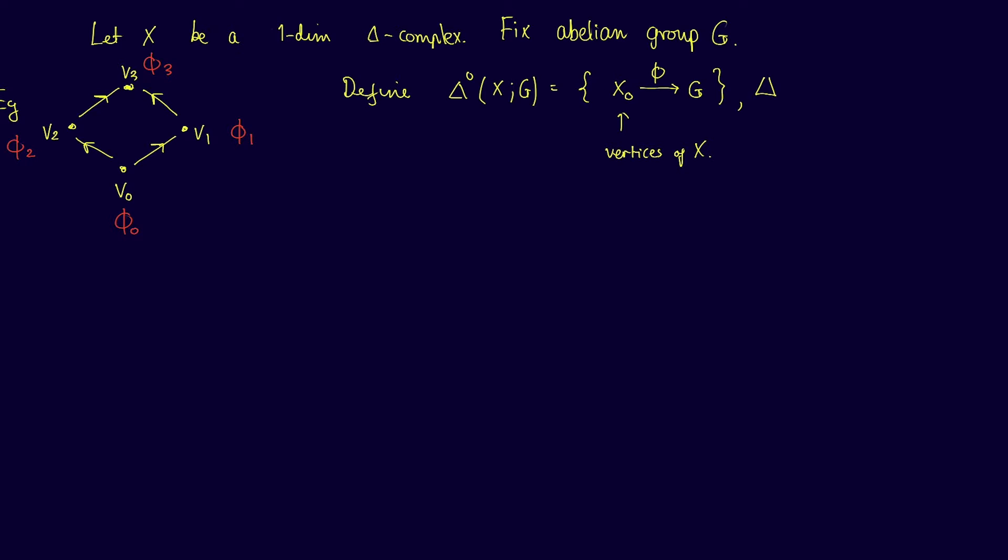We'll do the same for the edges of X, writing Δ¹(X;G) for the group of functions from the edges of X to the group G. We'll denote these elements with ψ. In our example, so for example, the edge from v₀ to v₁ is assigned to some group element under ψ, which we'll denote by ψ₀₁.